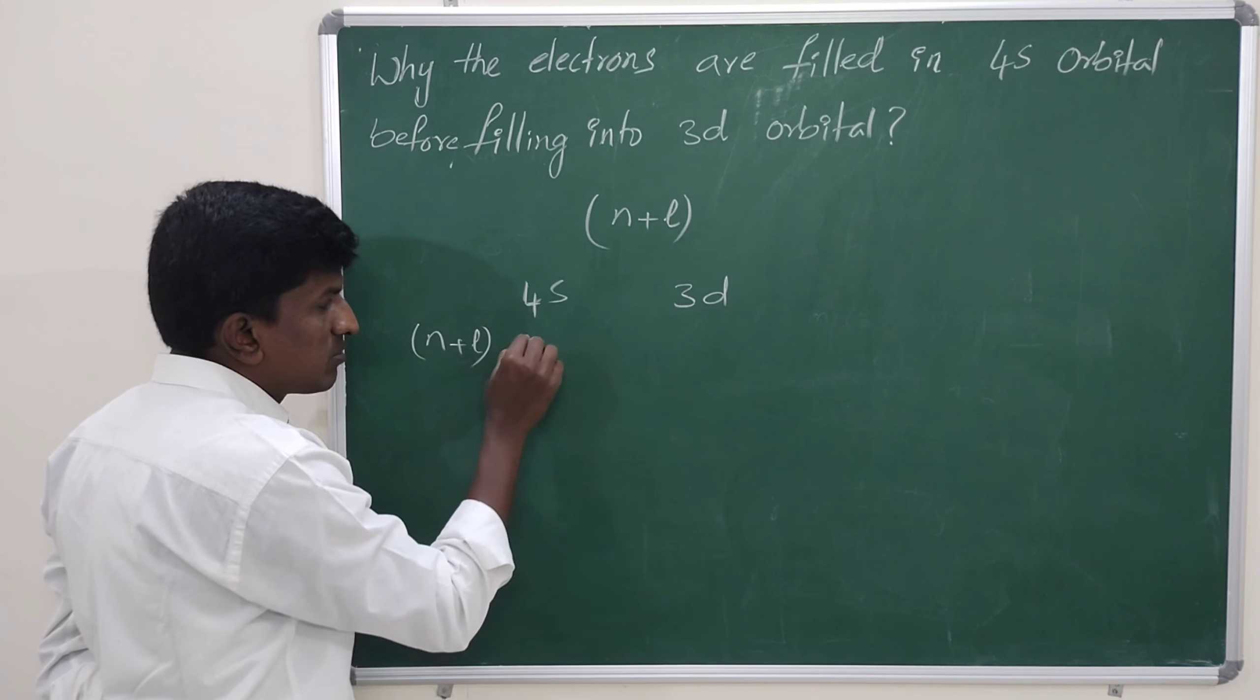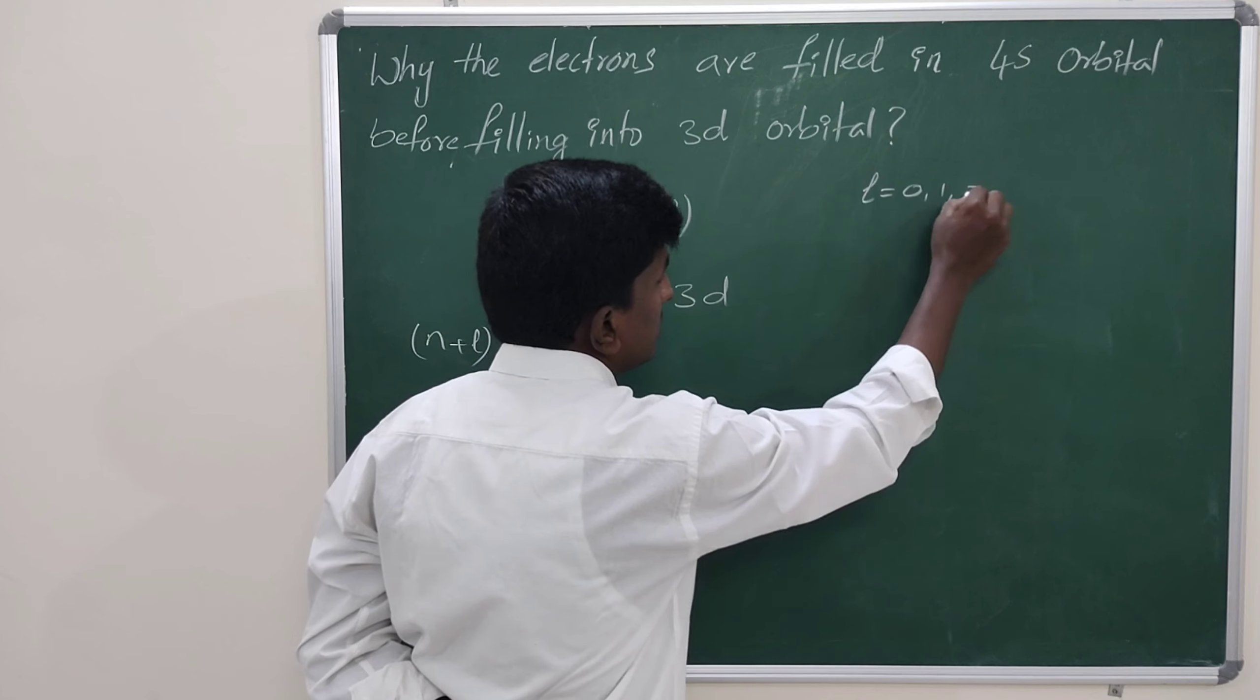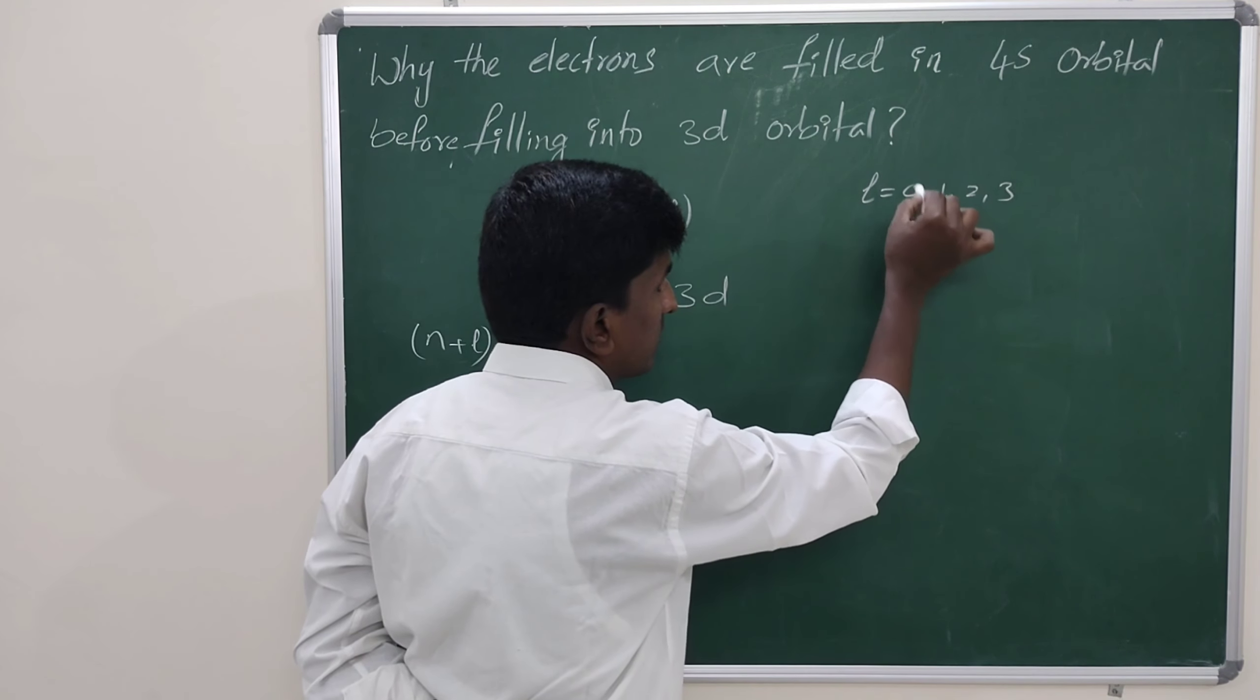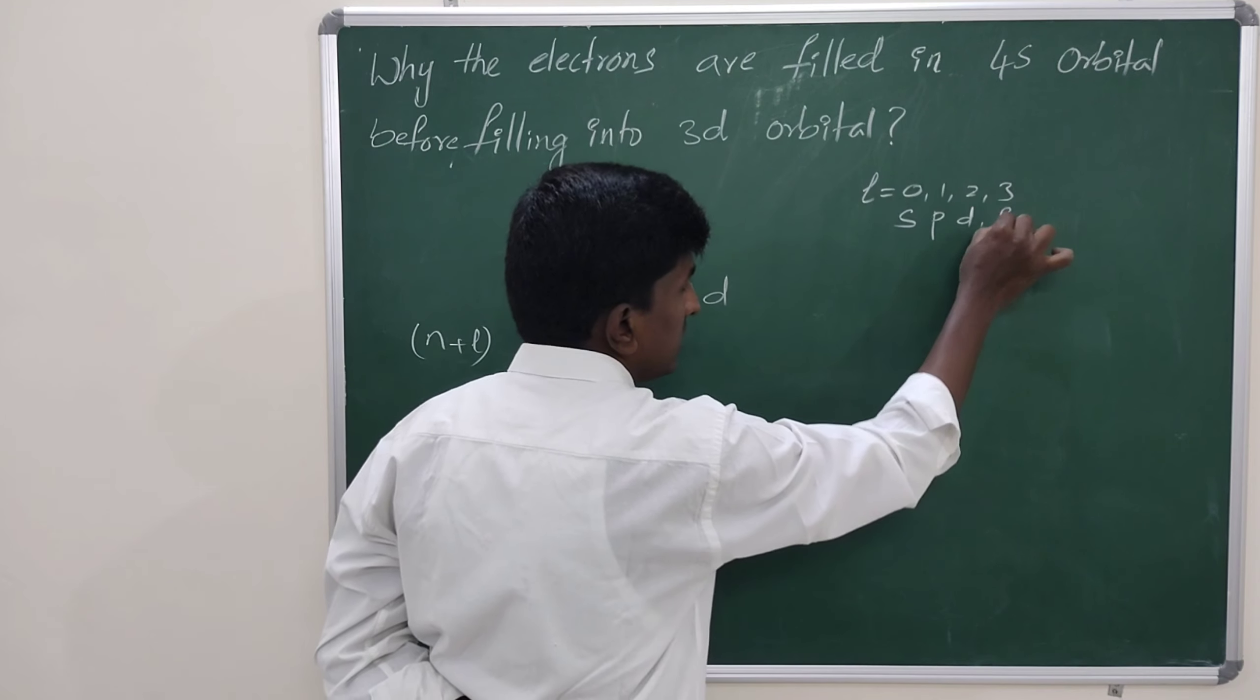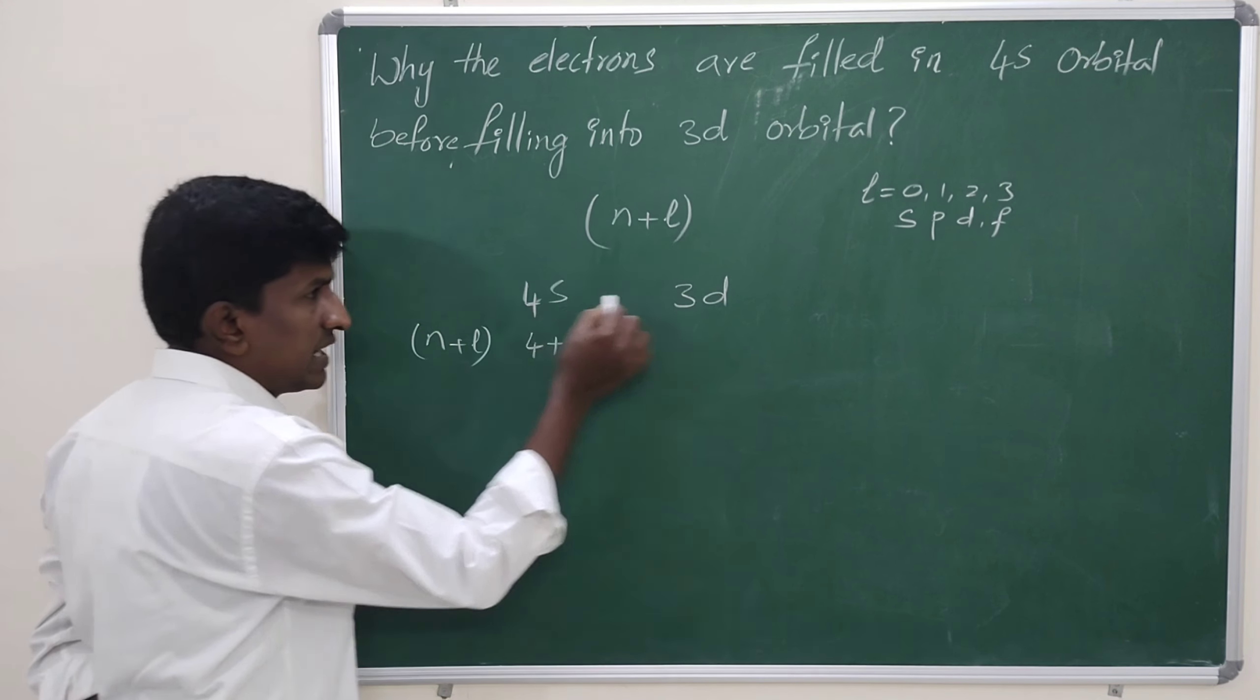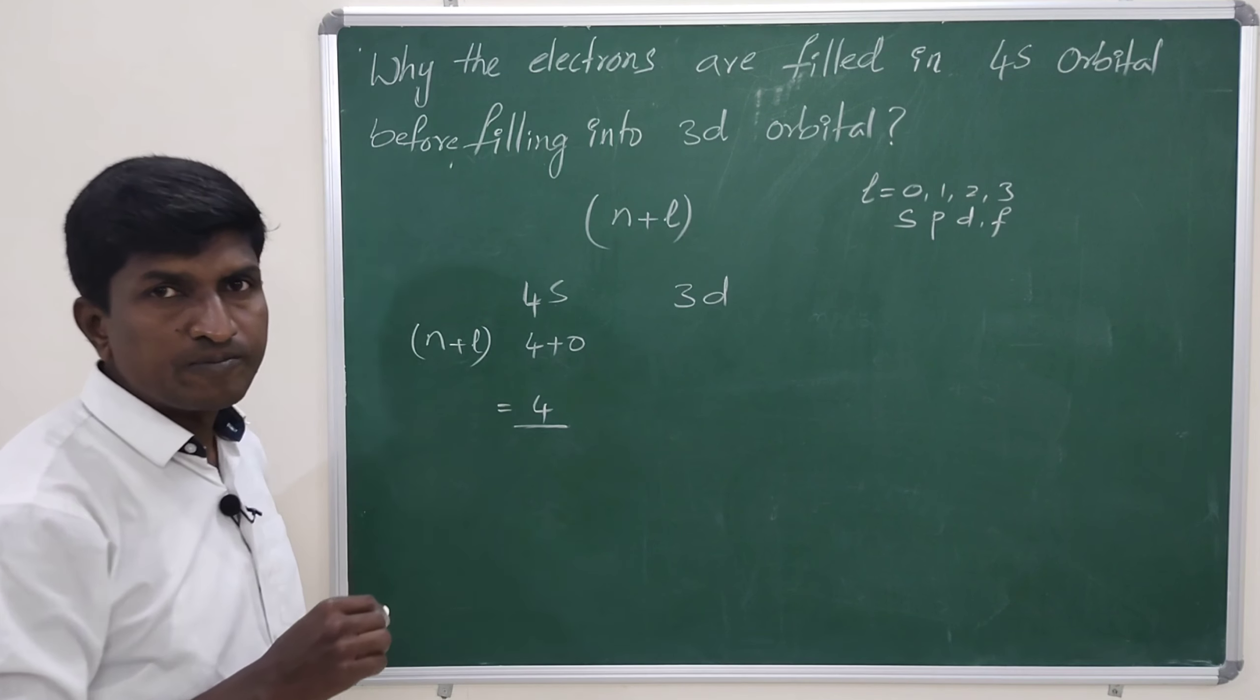This is the principal quantum number that is 4, and l values as we know that 0, 1, 2, 3. If l equals 0, this is s orbital; for l equals 1, p orbital. For l equals 2, d orbital. For l equals 3, f orbital. So here the s orbital, the l value for the s orbital is 0. So then its energy is 4 units.